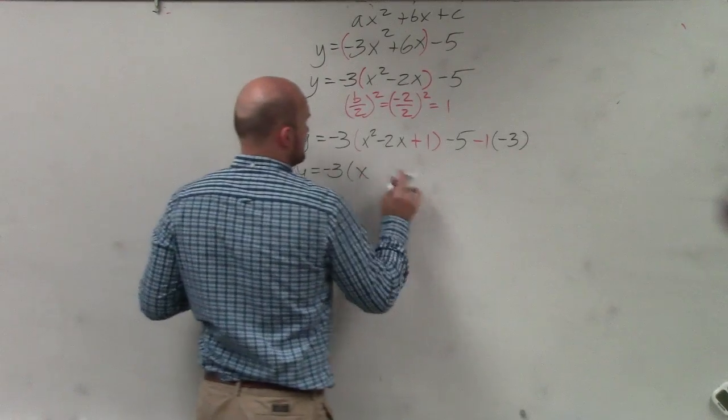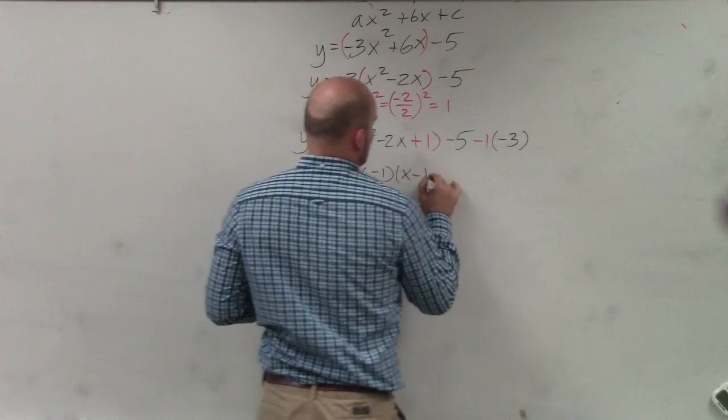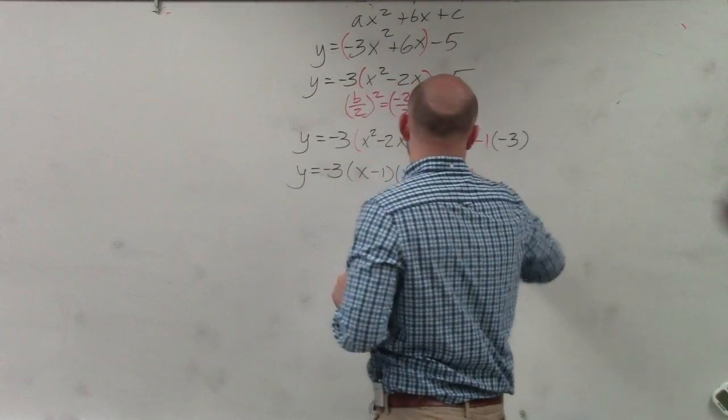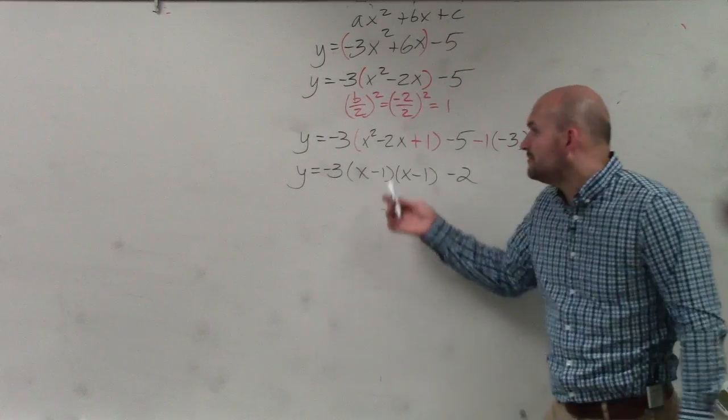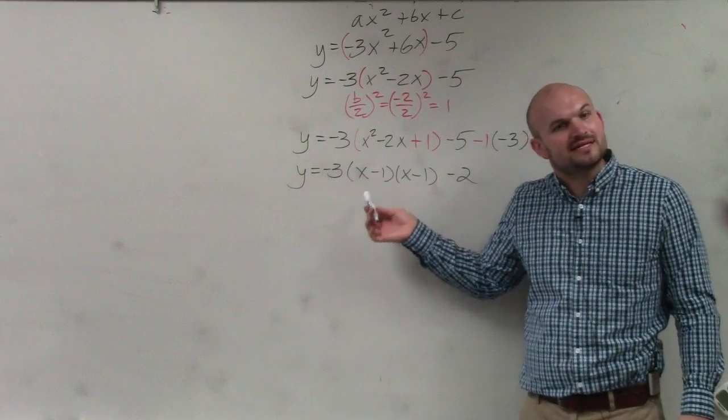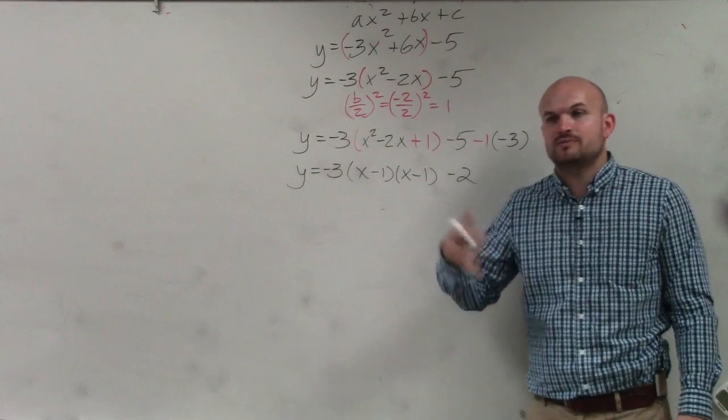x minus 1 times x minus 1. However, we don't want to write this as x minus 1 times x minus 1. We want to write this as a binomial squared.